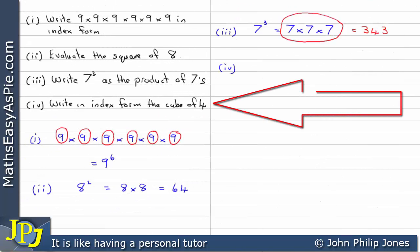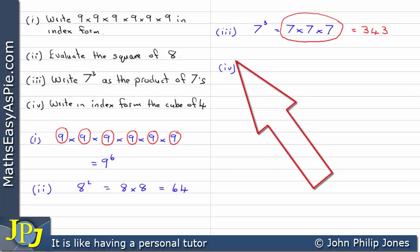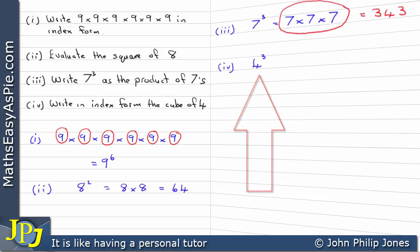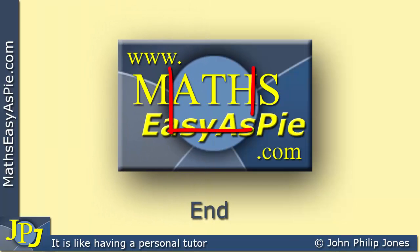The fourth question says: write in index form the cube of 4. That's simply 4 to the power of 3 — that's what we mean by the cube of 4, and this is written in index form.